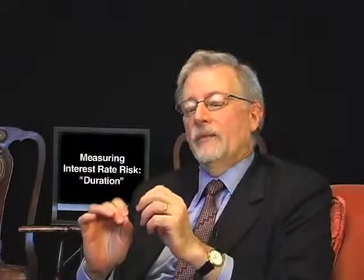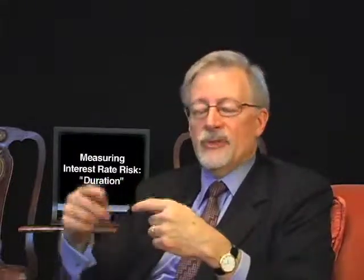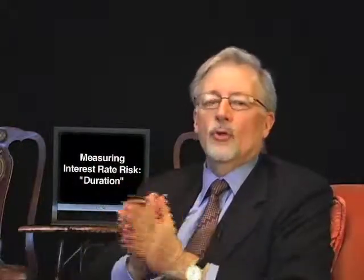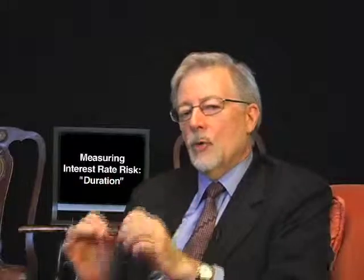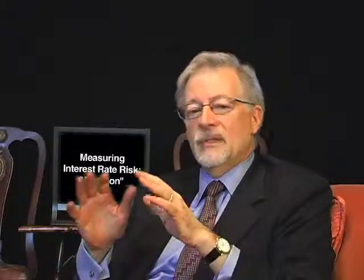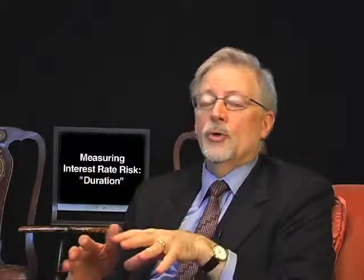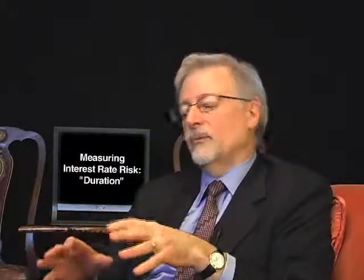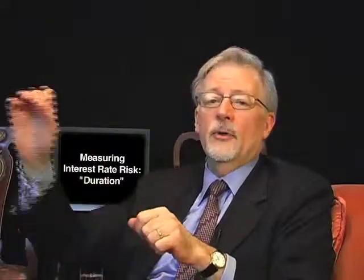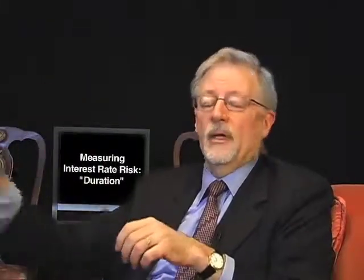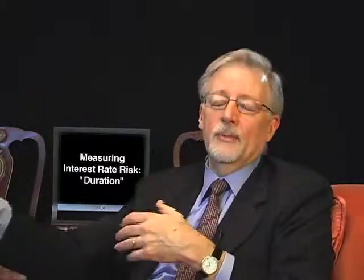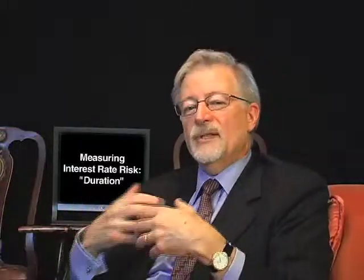And the way they measure that, by using the weight of the cash flow, is called duration. A lower duration means a little less volatility for every 1% movement in the market. Your portfolio is going to have less jumping around, either up or down, than if you had a longer duration, even though the bonds themselves all may have had the same final nominal maturity.